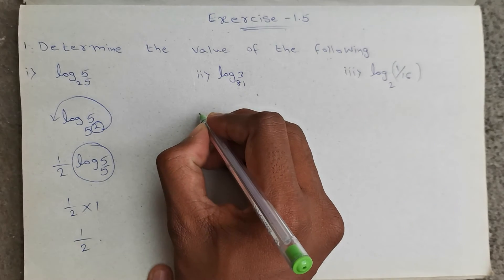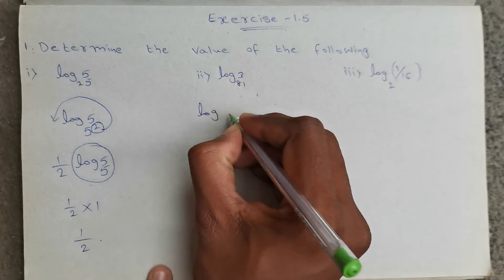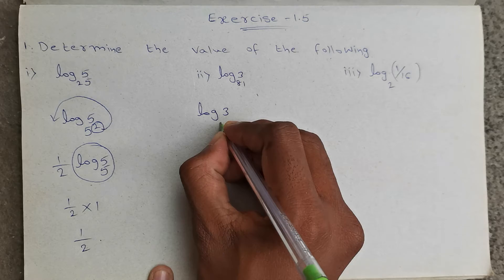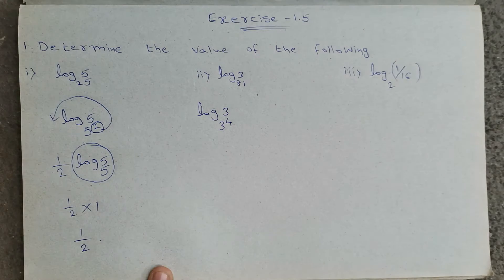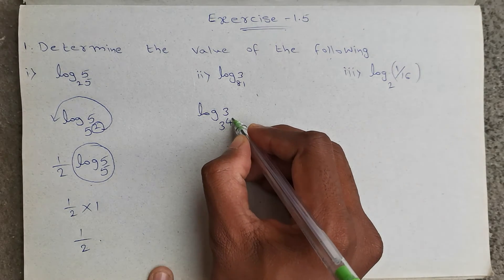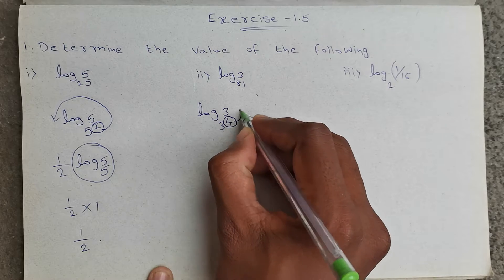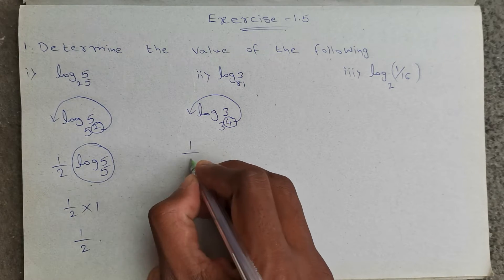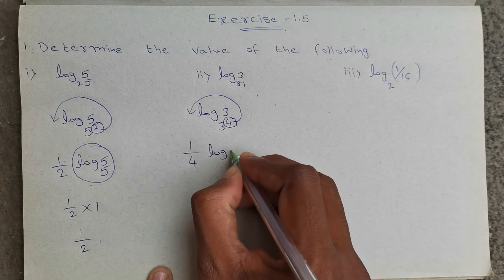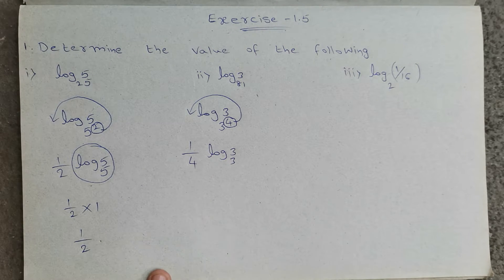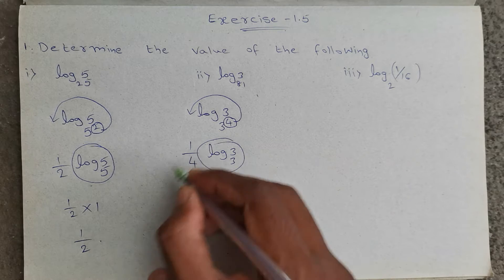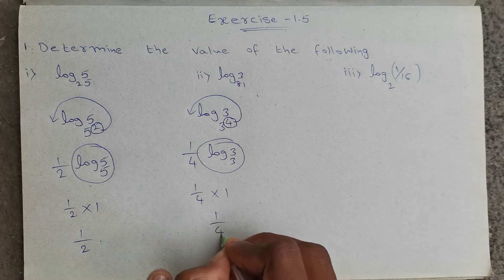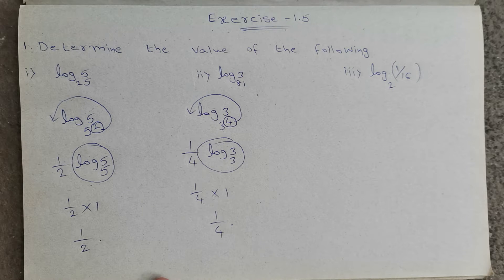Next, second question. Log 3 base 81. Base 81 can be written as 3 power 4. Again here also the power is for the base, so if we take that to the front, 4 will be 1/4. Log 3 base 3. Log 3 base 3 value is 1. So 1/4 into 1, it is nothing but 1/4.